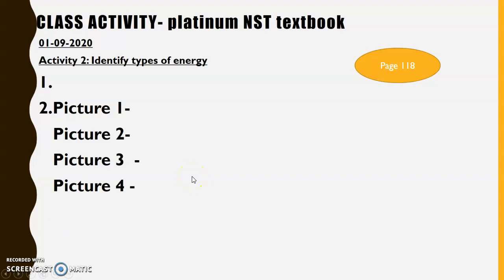On page 118 in your NST textbook there is an activity. This activity has given you pictures which show different types of energy, and they've also given you statements, so you don't have to create your own. Picture one is a girl holding a torch. Picture two is a girl listening to the radio. Picture three is a young boy sitting next to a heater. And picture four is a young lady playing soccer.